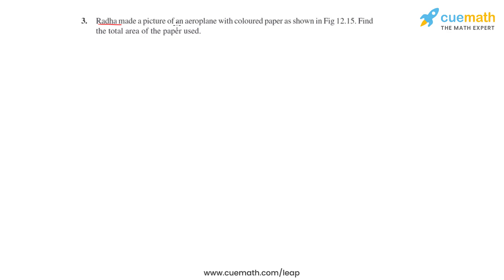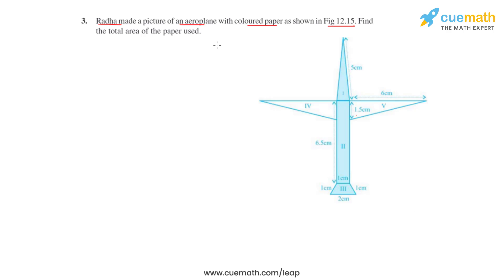Question number 3 says that Radha made a picture of an aeroplane with colored paper as shown in figure 12.15. We have to find the total area of the paper used. As we can see in the given figure, there are different regions marked: region 1, 2, 3, 4 and 5, which are of different shapes. We will find each area separately and then add them to get the total area of the aeroplane.